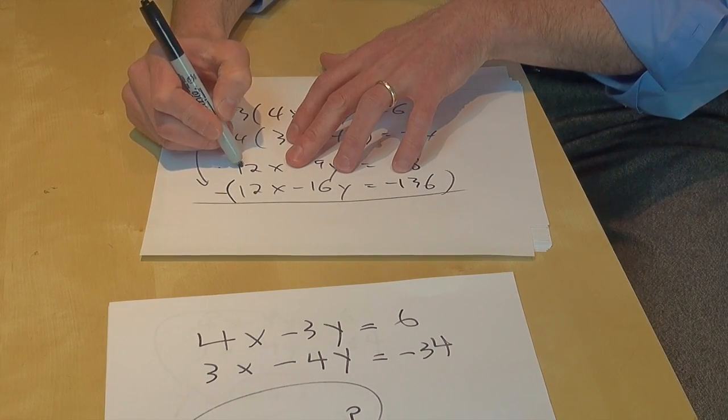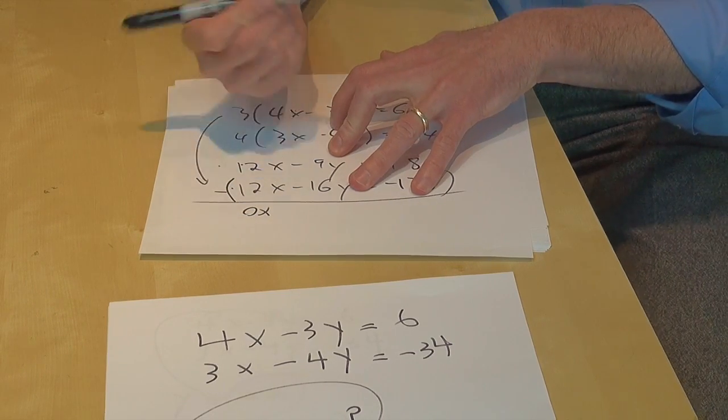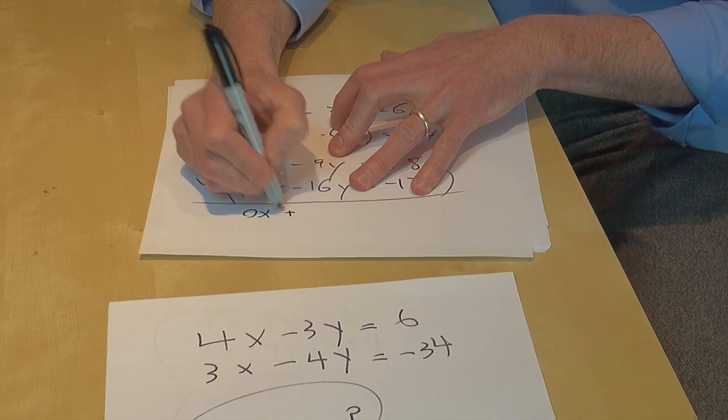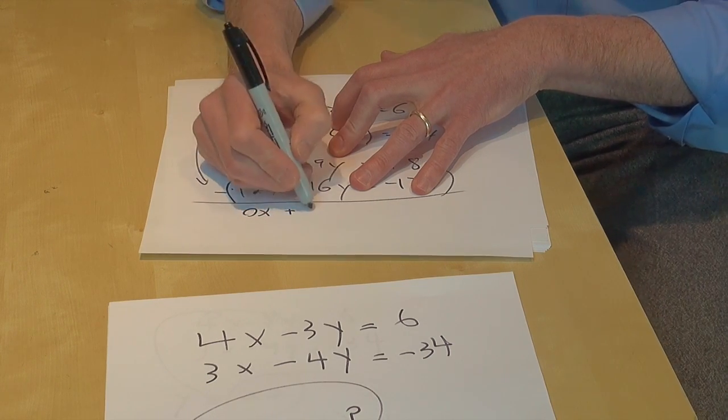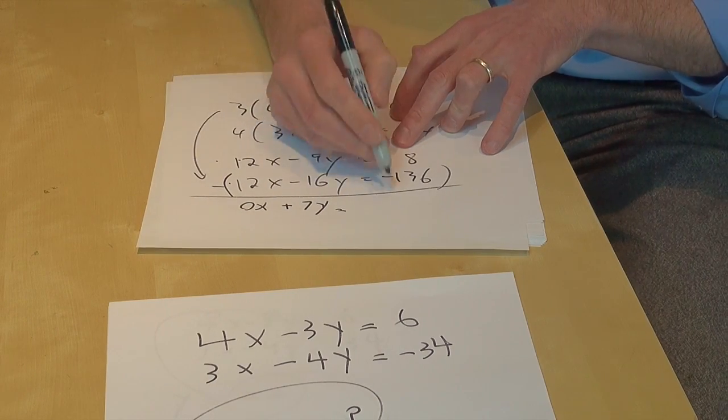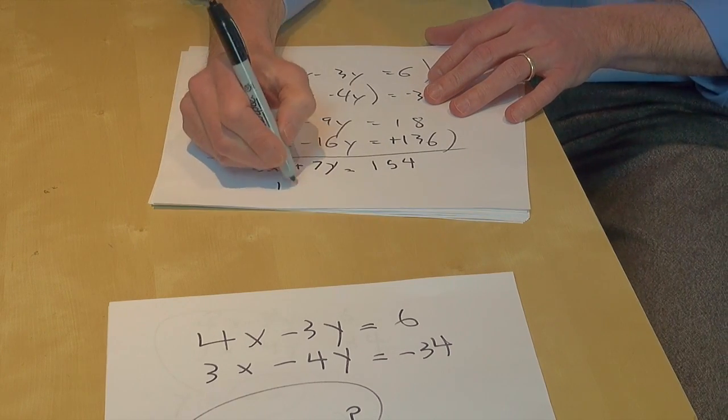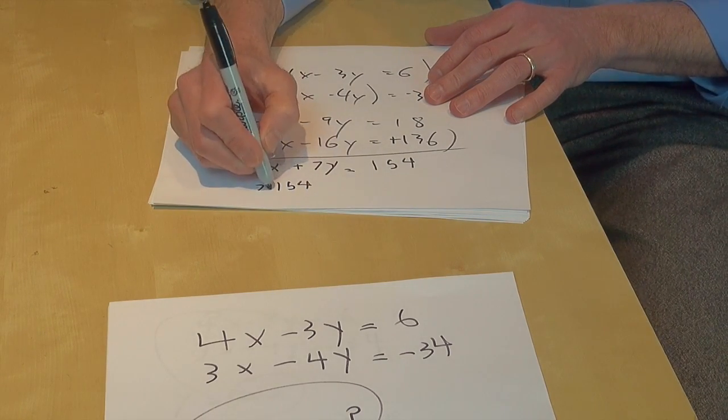12x minus 12x is 0x. Minus 9y minus a negative becomes plus 16y, so plus 16y minus 9y gives us plus 7y. We're getting there. 18 minus negative becomes plus 136, which gets me 154.